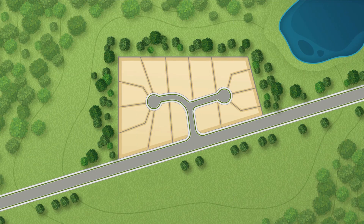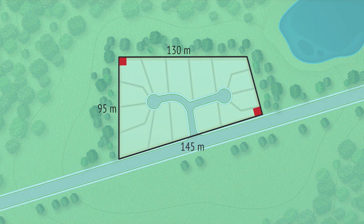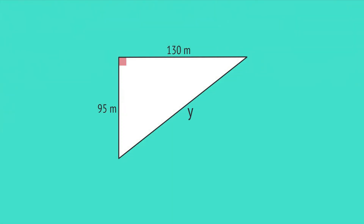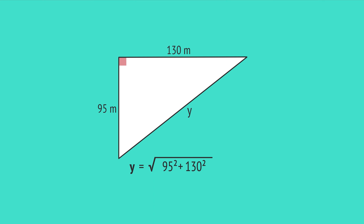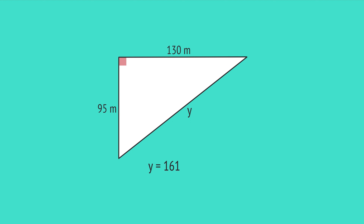In this problem, a new subdivision has a boundary in the shape of a quadrilateral, and the boundary fence forms two right angles as shown. Three of the boundary dimensions are given, and we need to calculate the unknown dimension x. By drawing a diagonal, we can split the quadrilateral into two right-angled triangles. We use the top triangle to calculate the diagonal length y, the longest side. Substitute these values into the formula, take the square root to give the calculation for y, and enter this into a calculator. This gives us y equals 161 metres.